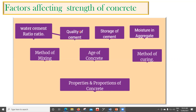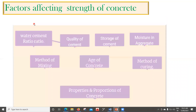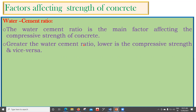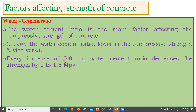The water-cement ratio is the main factor which affects the compressive strength of concrete. Greater the water-cement ratio, lower is the compressive strength, and vice versa. For every increase of 0.01 in the water-cement ratio, there is a decrease in strength of one to one and a half megapascal.